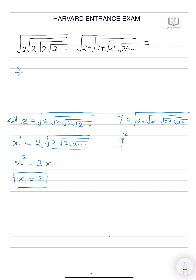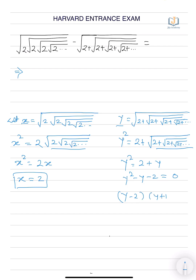Similarly, squaring y: y squared is equal to 2 plus under root 2, plus under root 2, plus... like that, and this is nothing but y. So, y squared equals 2 plus y. Therefore, y squared minus y minus 2 equals 0. Factoring: y minus 2 and y plus 1 equals 0. So y equals 2 or y equals minus 1. But y is not less than 0, so y equals 2.